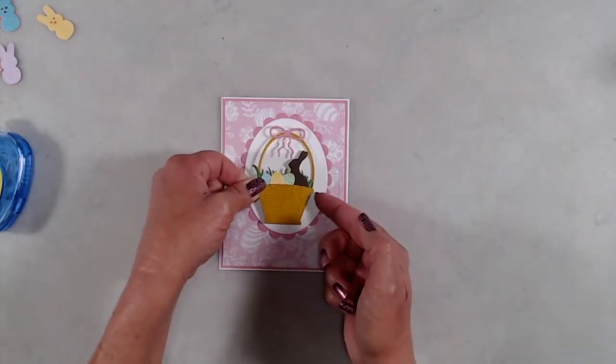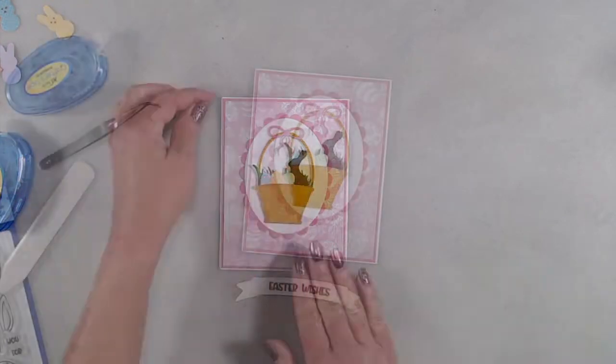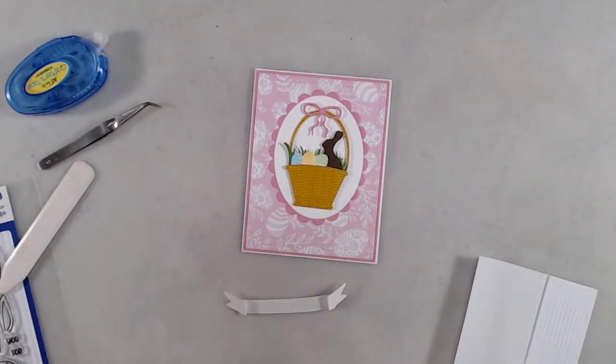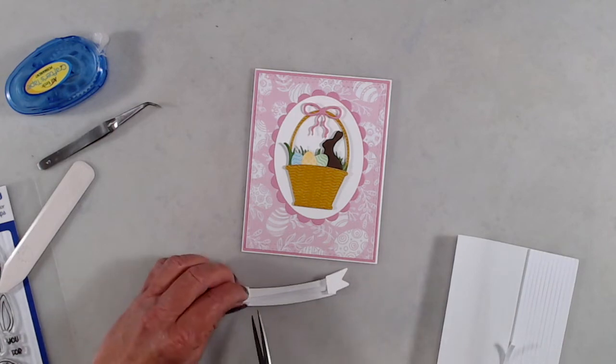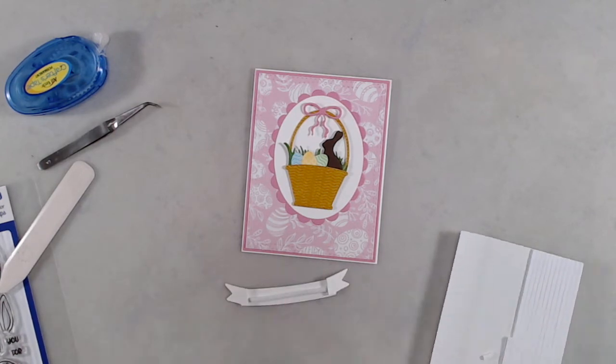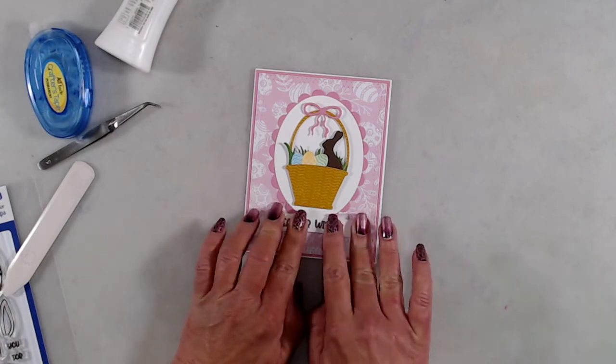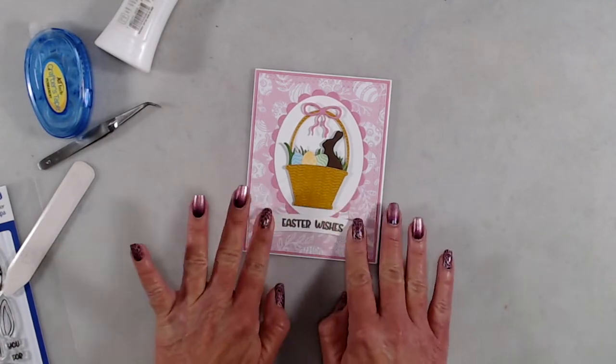And then it was time to add my sentiment. This particular sentiment is from the extra special stamp set and the banner is from the slimline fancy frames die set. I added foam tape down the center of that banner just to make sure that it popped up just a little bit and adhered that to the front of my card. And that's it - that finishes up my second card.